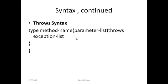A throws clause lists the types of exceptions that a method might throw. This is necessary for all exceptions except those of type Error, RuntimeException, or any of their subclasses. All other exceptions a method can throw must be declared in the throws clause. The syntax is: type methodName(parameterList) throws exceptionList — where the exception list can be comma-separated if listing multiple exceptions.